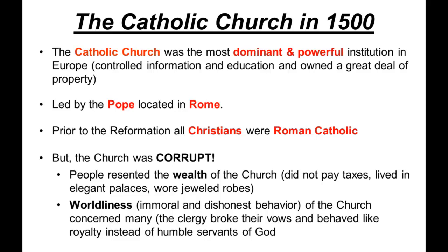Back in 1500, the Catholic Church was the most dominant and powerful institution in Europe. They controlled everything — what information went out, the kings, the schools — they owned everything. About 50% of all property in Europe was owned by the Catholic Church. It was led by the Pope, located in the Vatican in Rome. Prior to the Reformation, all Christians were Roman Catholic. There was nothing else. This Reformation specifically talks about the reformation against the Catholic Church.